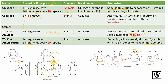To summarize: amylose is the unbranched portion; amylopectin has branching every 20 glucose repeats; glycogen has branching every 10 glucose repeats; and cellulose is like amylose but uses beta glucose instead of alpha glucose.